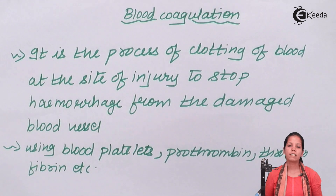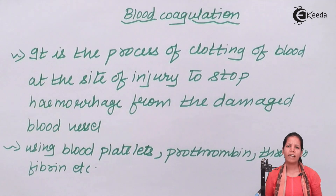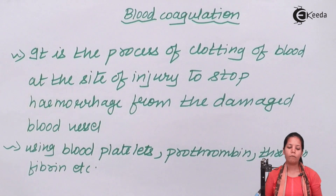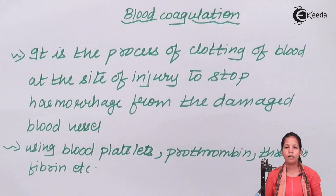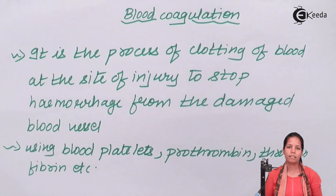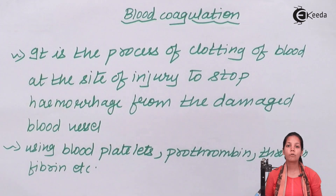The fibrin, which is insoluble, undergoes polymerization and forms thread-like substances that trap erythrocytes. Once that occurs, platelets and plasma come together and complete the clotting mechanism. Once the clot is formed, it is also termed as thrombin or thrombus.